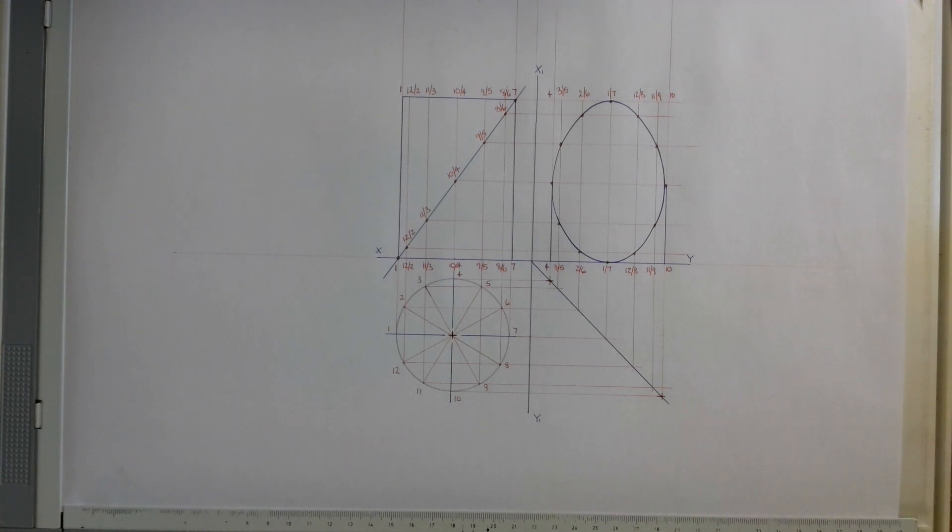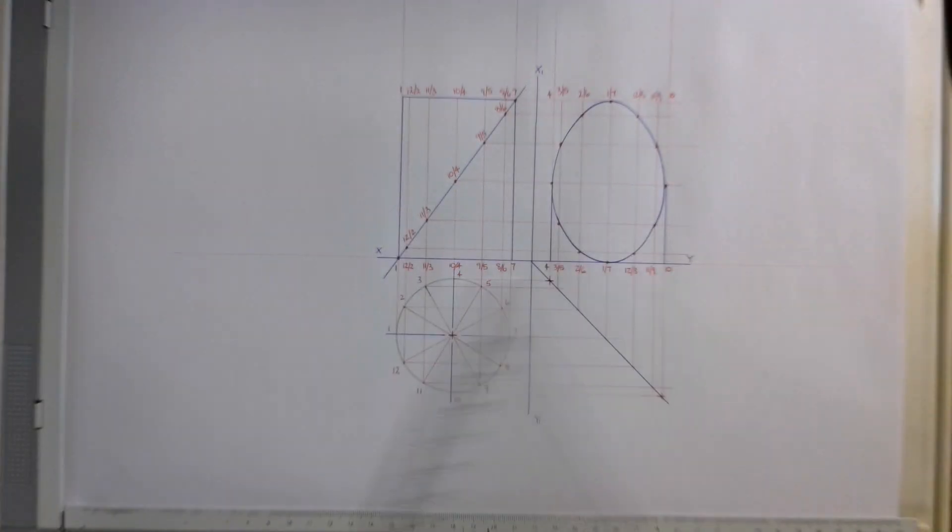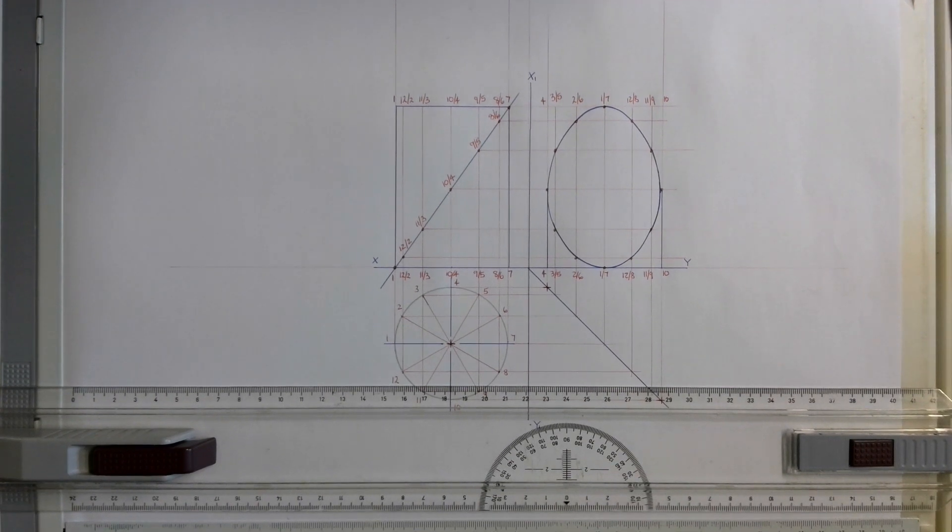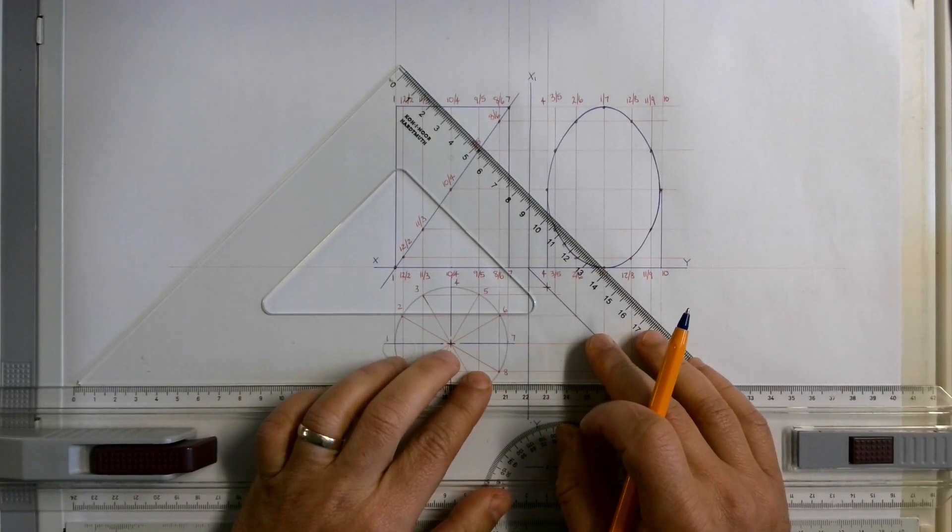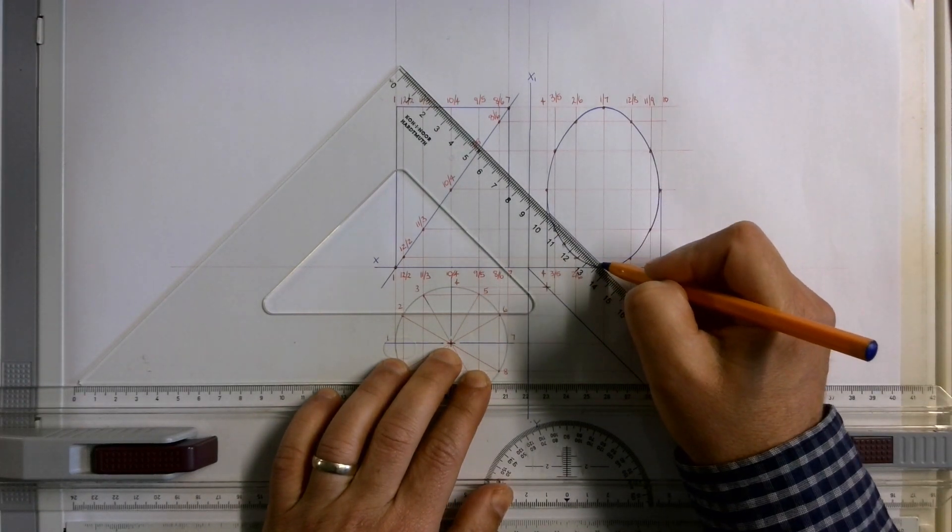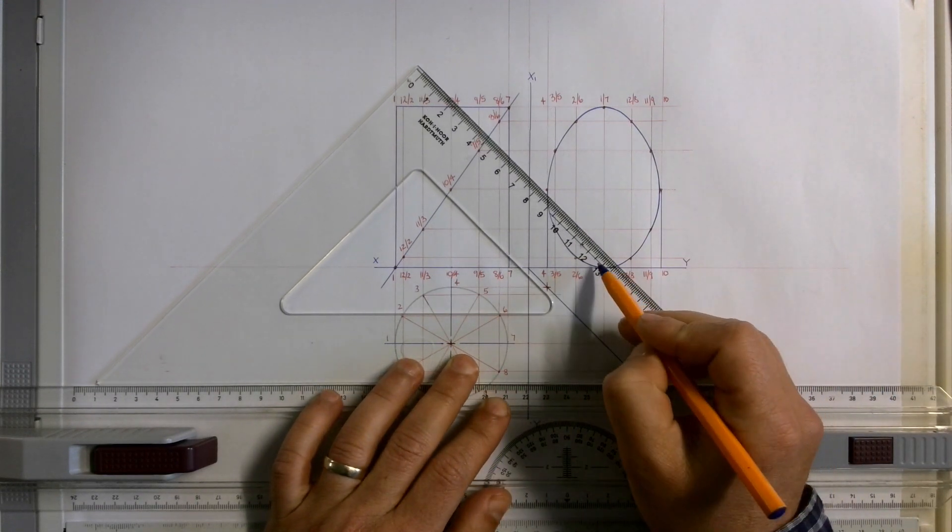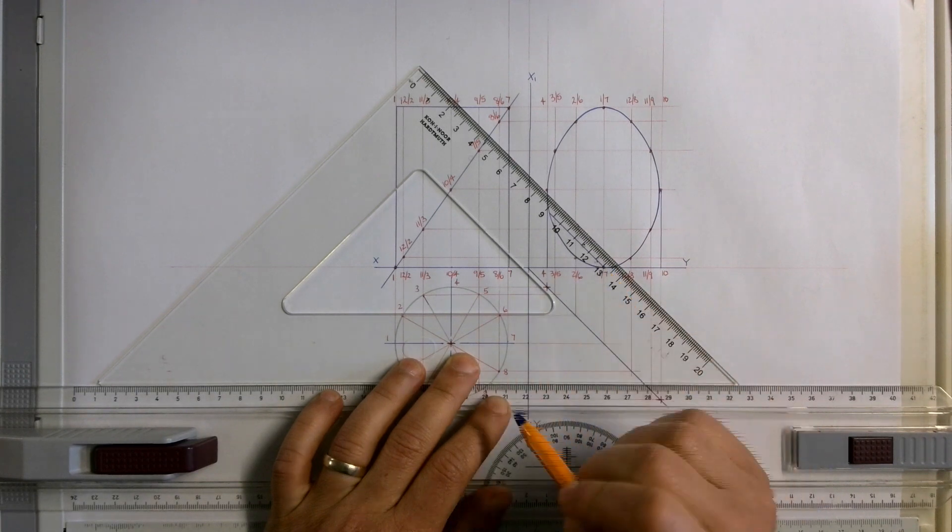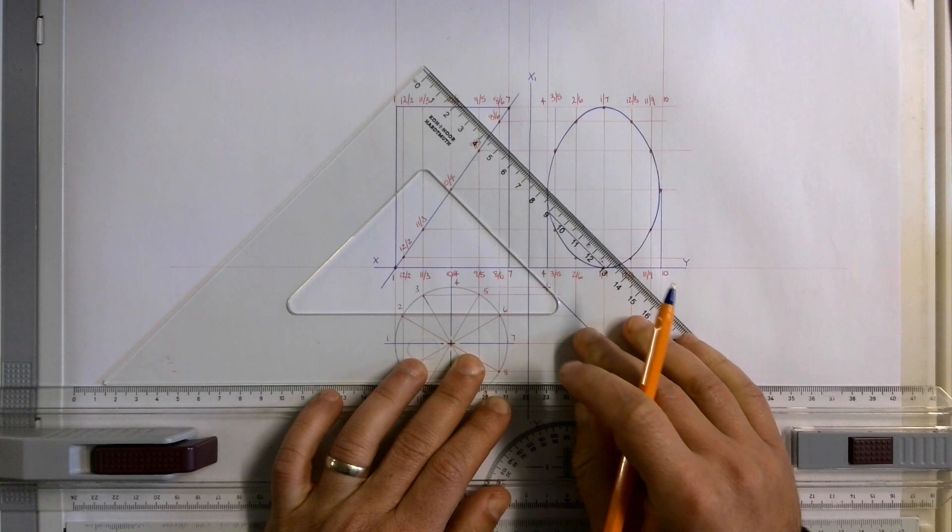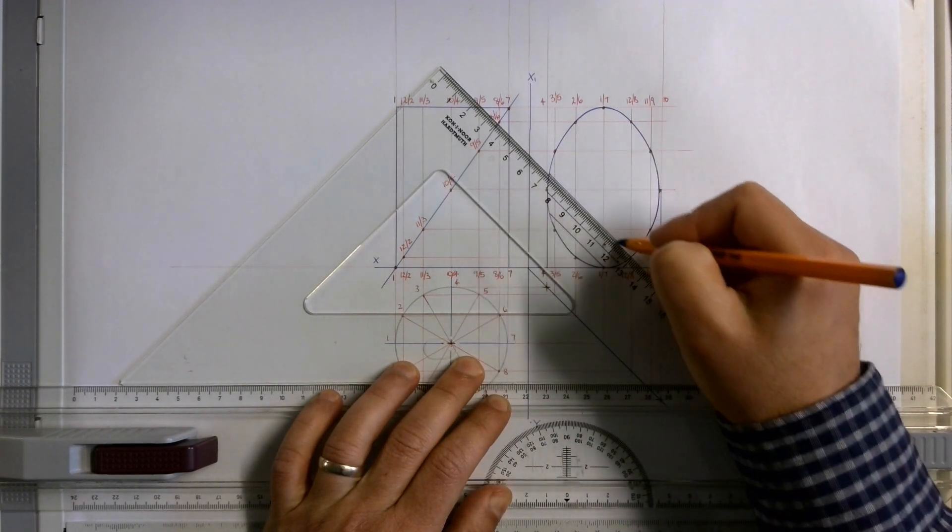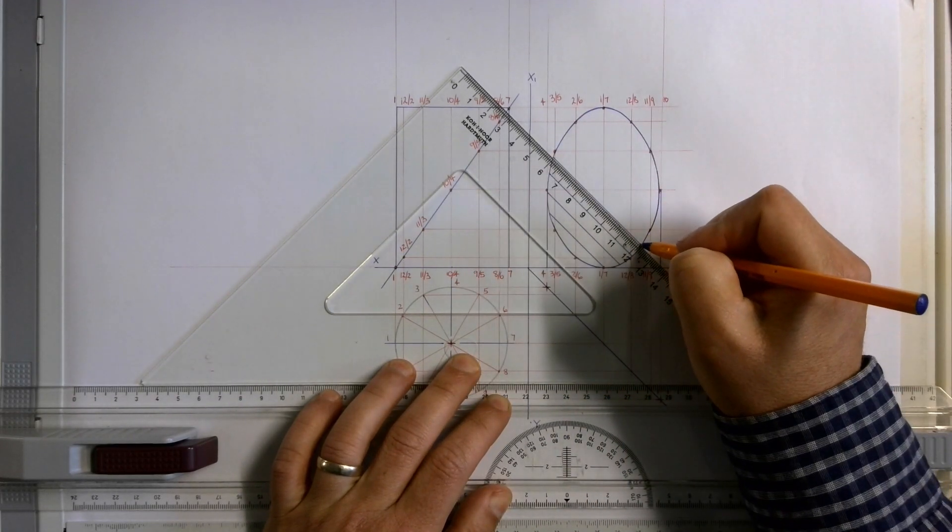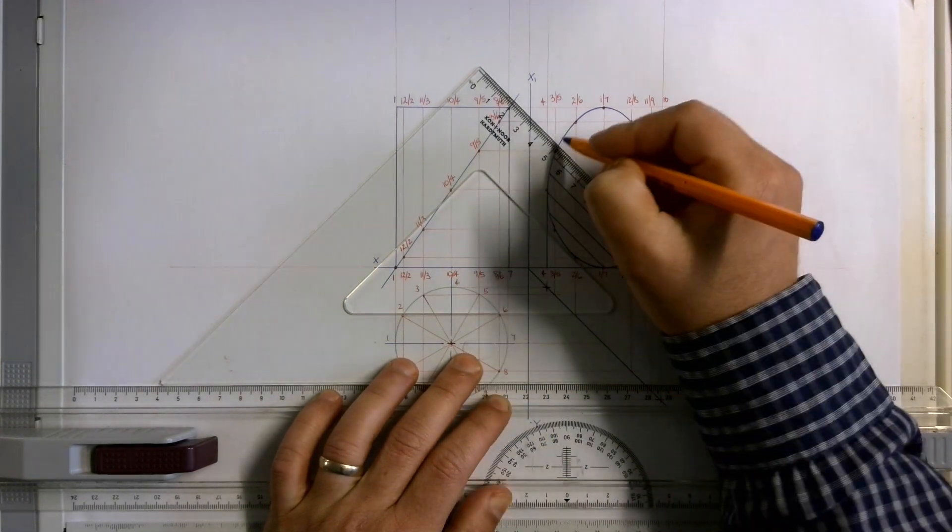Now we just need to cross hatch. Put your t-square back on the board. A nice little trick is if you use the length of one of the lines and you slide it along, you can take that line that you just drawn to the tip of that line and it'll give you equal distances between your cross hatching lines and your section lines at 45 degrees.